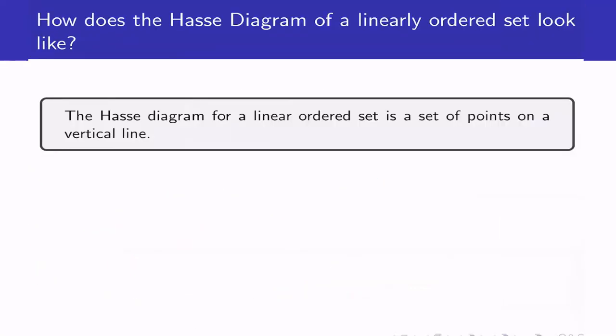How does the Hasse diagram of a linearly ordered set look like? The reason why it's called a linear ordering is because the Hasse diagram will just be a line. If we get any two points, they will always be related, so it will just be one straight line.